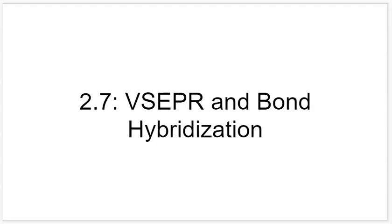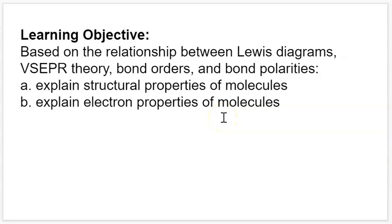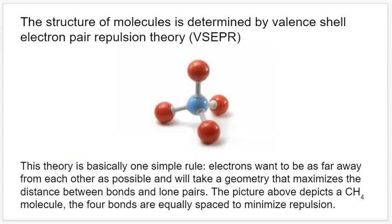Hello AP chemistry students. We're now at section 2.7, which is the last of the unit 2 sections, and this one is on VSEPR and bond hybridization. The structure of molecules is determined by valence shell electron pair repulsion theory, otherwise known as VSEPR.